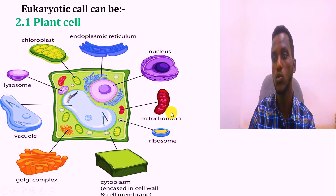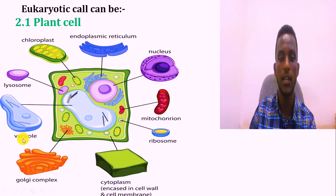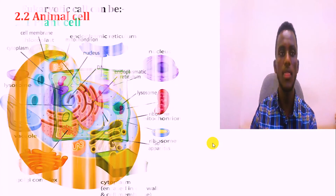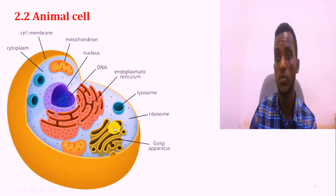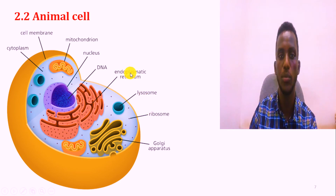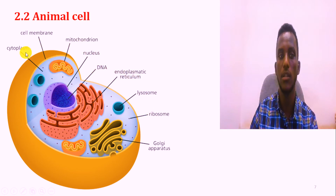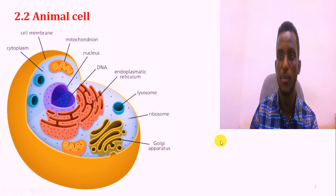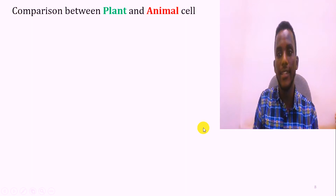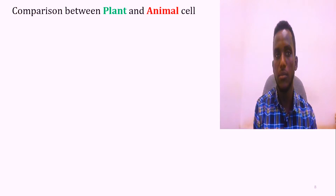The other one is the animal cell. The animal cell is represented by ribosomes, lysosomes, endoplasmic reticulum. Inside the nucleus it consists of genetic material, that is DNA. Mitochondria, cell membrane, and cytoplasm are also present. Let's see the comparison between the plant and the animal cell.